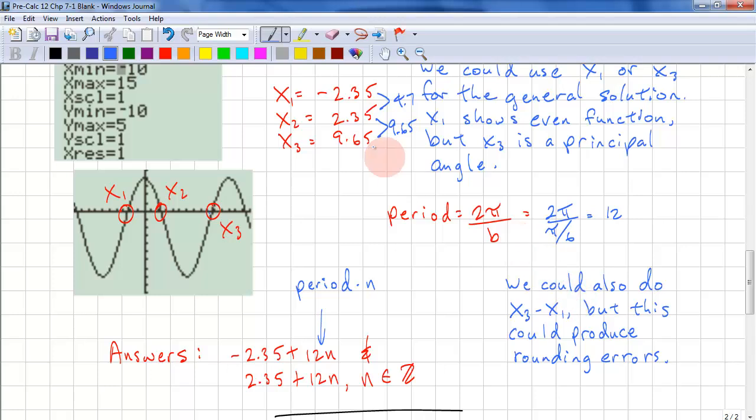You could have done x3 minus x1 to get your period. In this case, it would have worked out to 12, but sometimes you'll get rounding errors, so it's better to calculate your period directly if it's possible. Let's look at the next problem.